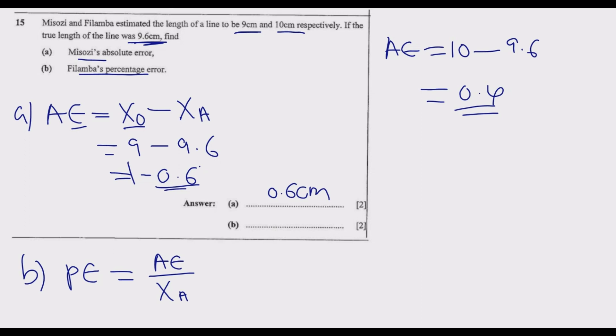Now PE is given by 0.4 over the true value 9.6, then times 100 for percent. So we say 0.4 times 100 is 40, so we get 40 there, then divide by 9.6.